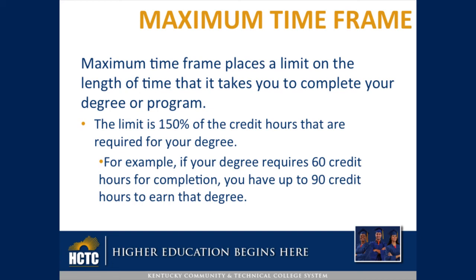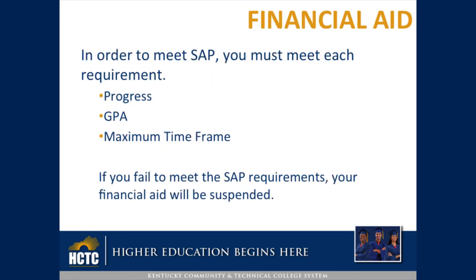Maximum Time Frame places a limit on the length of time that it takes you to complete your degree or program. The limit is 150% of the credit hours that are required for your degree. For example, if your degree requires 60 credit hours for completion, you have up to 90 credit hours to earn that degree.